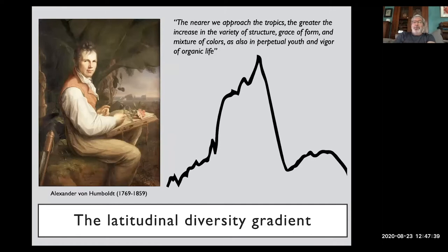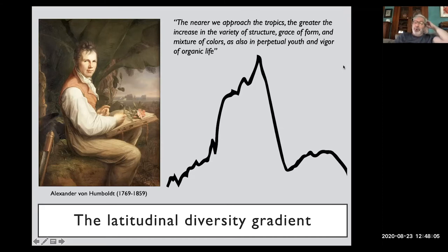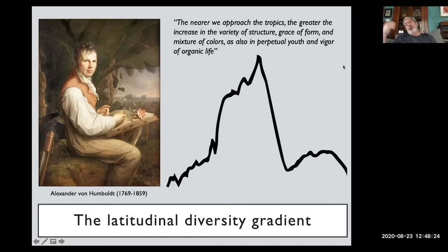Let's talk about the latitudinal diversity gradient. It's been known for hundreds of years. Here's a quote from Alexander von Humboldt: "The nearer we approach the tropics, the greater the increase in the variety of structure, grace of form, and mixture of colors, as also in perpetual youth and vigor of organic life." Humboldt made this amazing journey across the Americas and had a unique early opportunity to appreciate how much more diverse the tropics were than temperate areas to the south or north.